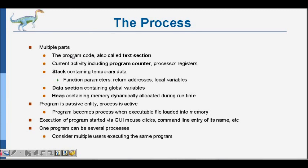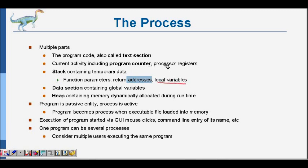A process has program code stored in the text section. Current activity including the program counter and processor registers is tracked — the program counter stores the line of code being executed. The stack contains function parameters passed to functions, return addresses (so after executing a function we know where to return), and local variables. We also have a data section for global variables, and a heap where dynamically allocated objects or data are stored — for dynamic memory allocation you use the heap.